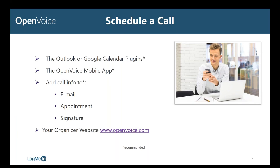Open Voice is reservationless, so scheduling calls isn't required to use your conference line — you can start a call anytime. With that said, Open Voice offers several ways for you to schedule your conference calls depending on your setup and preferences. You can use our Outlook or Google Calendar plugins to schedule calls directly within your calendar with one click. You may also use the Open Voice mobile app, available for iPhone and Android, to schedule and start calls directly from your mobile device. Scheduling a call is really as simple as sharing your call information in an email or appointment — simply insert the Open Voice phone number and your conference room number and invite your participants. You may also schedule calls from the invite and schedule area of your Open Voice organizer website.